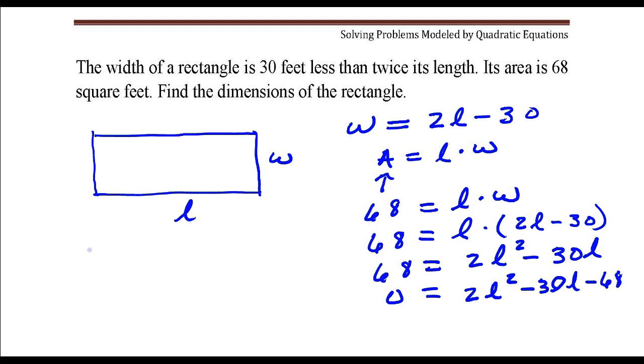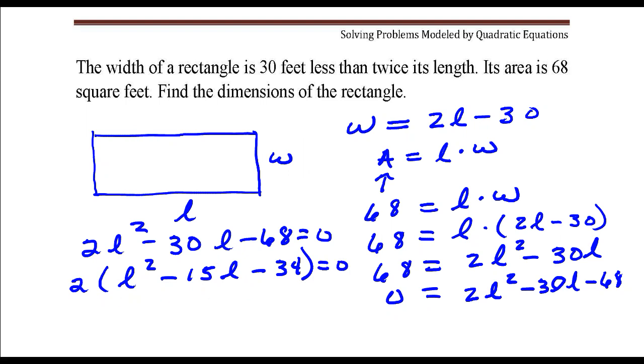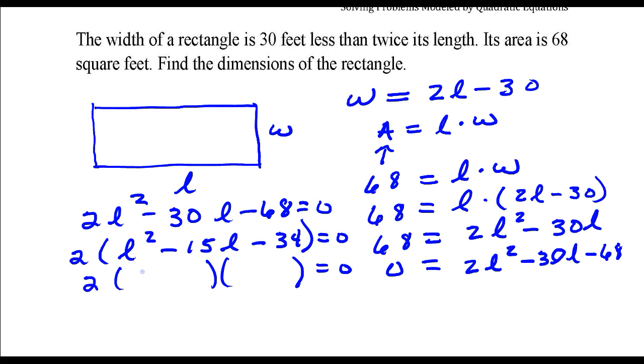Ok, so what I need to do is to solve this quadratic equation for l first. And I'm going to do that by first factoring a 2 out of each term. Ok, so I need to factor this quadratic into a product of 2 binomials. So I'm going to use 2 and 17 and make this number negative and this number positive.